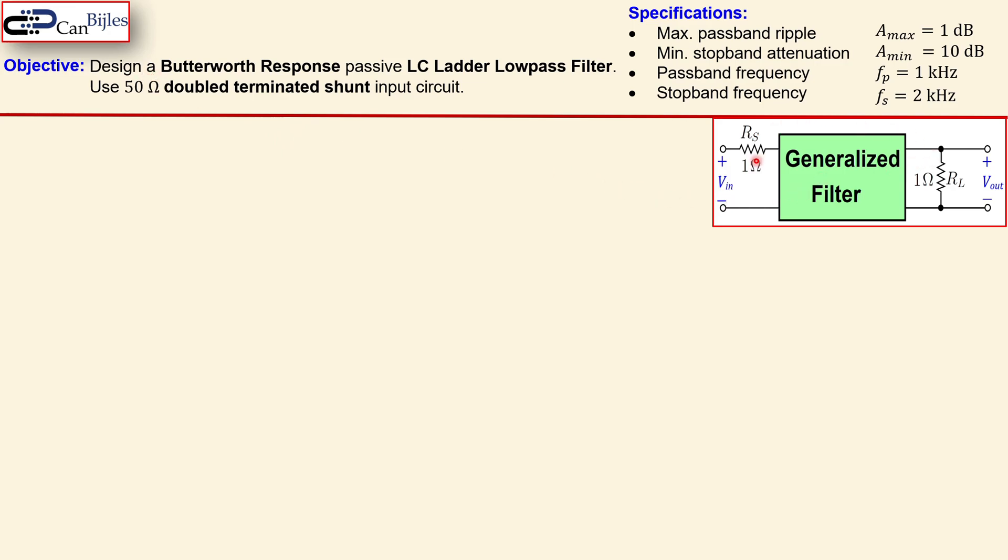So you can see actually the generalized filter here, this is the input, this is the output, and by 50 ohm double terminate actually means that this must be 50 ohms and this is also 50 ohms. This is actually a normalized standard filter circuit such that you can scale it up to a required value you want. If this is for example 60 ohms, everything is 60, so that's just scaling up.